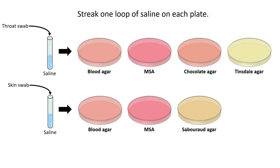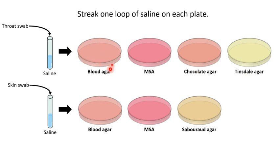Now that we know the purposes of each of these plate types, let's look at how they'll be inoculated. A throat swab will be taken and placed into a tube of sterile saline. One loop of that saline will then be inoculated onto each of the following plates: the blood agar plate, an MSA plate, a chocolate agar plate, and a Tinsdale agar plate. The goal is to swab the loop across the entire surface of the plate to achieve individual colonies that can be analyzed.